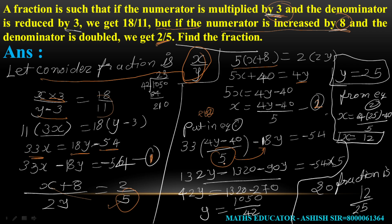We have Equation 1 with 33x. Substituting x equals (4y minus 40) divided by 5 into Equation 1: 33 times (4y minus 40) gives 132y minus 1320, all divided by 5, minus 18y equals minus 54. Multiplying through by 5: 132y minus 1320 minus 90y equals minus 270. Combining: 42y equals 1320 minus 270, so 42y equals 1050.